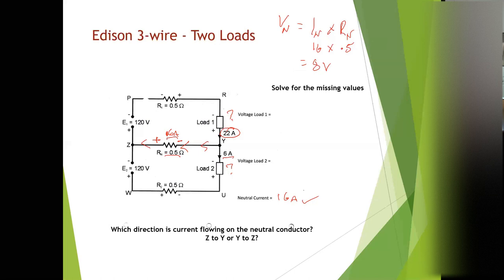We do the same process for the other two resistors. So for R1, voltage of R1 is equal to I of R1 times R1, which is 22 times 0.5, which gives you 11 volts.